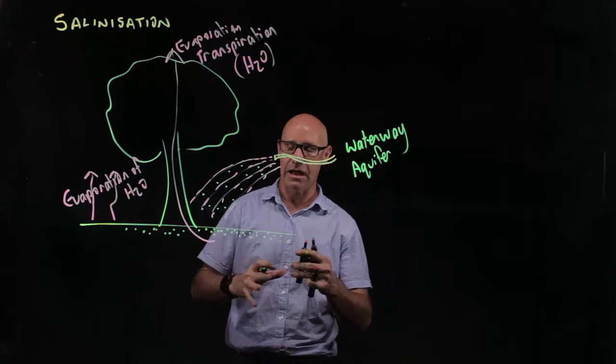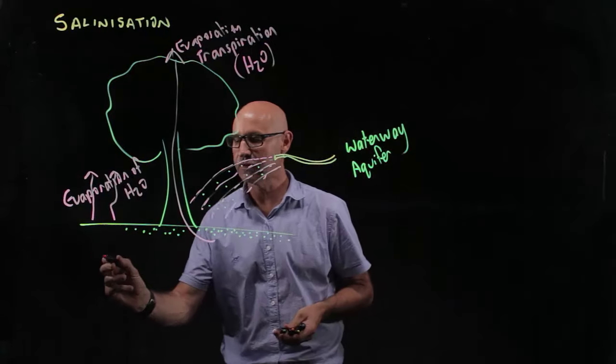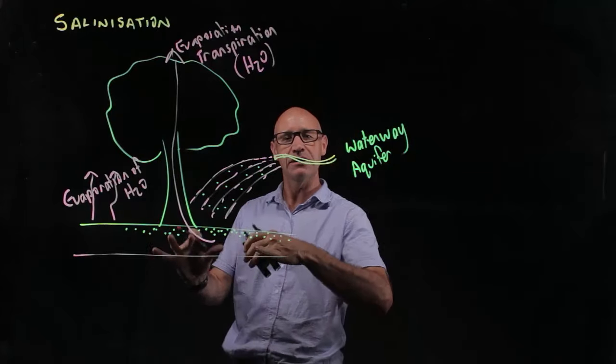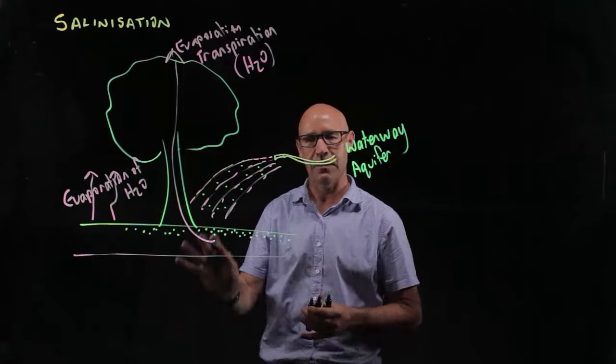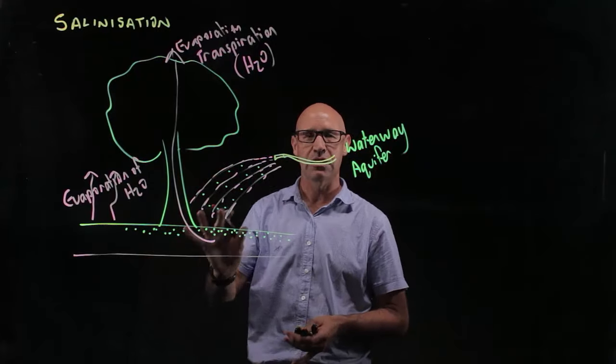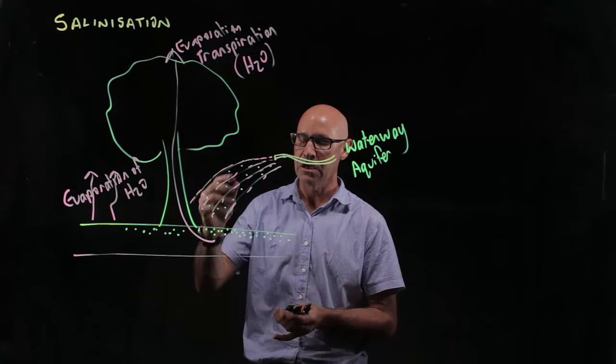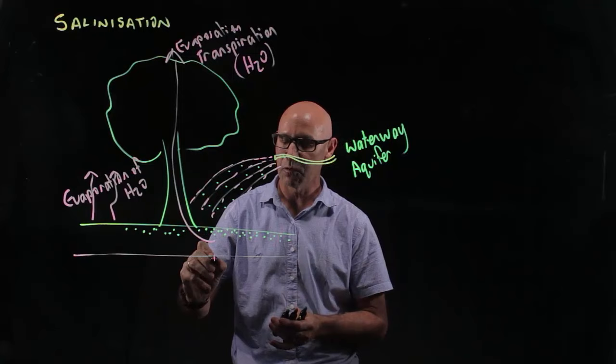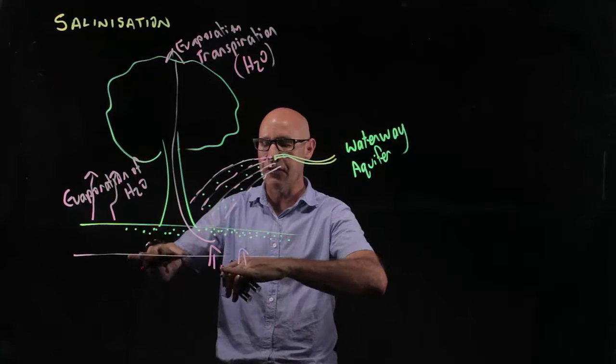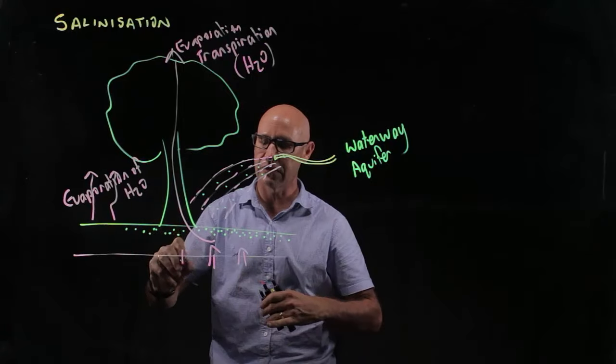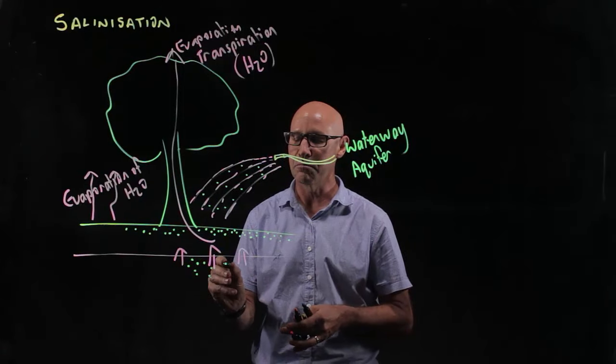Now, another double whammy here is that we have the water table—that's the water underneath the ground. When we're putting water through irrigation onto the land, the land that's under crops, we get a rising of this water table. The water seeps through and the actual water table rises. Of course, in this water table is also dissolved mineral salts.